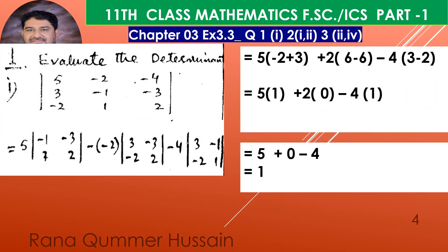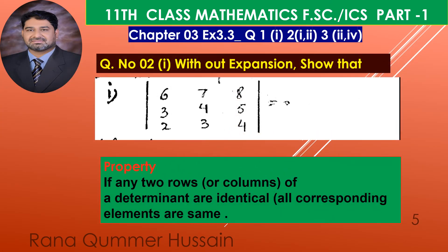Simplification is very simple. Three minus two gives one, so five times one gives five. Six minus six gives zero. Then three minus two gives one, so minus four times one gives minus four. The final result is: five plus zero minus four, which equals one. This is your final answer, dear students.